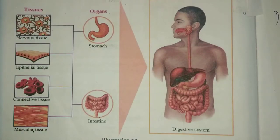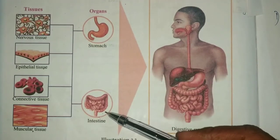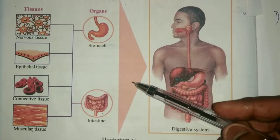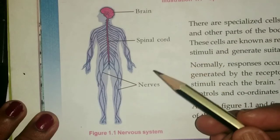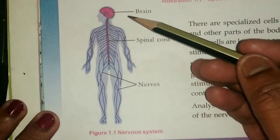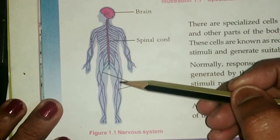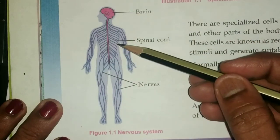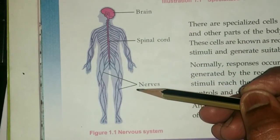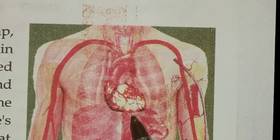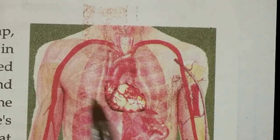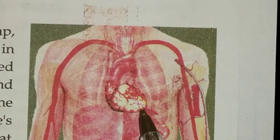What is the advantage of organs with the same function working together as a system? Here we can see two organs — stomach and intestine — working as a system. Another organ system is the nervous system, which consists of brain, spinal cord, and nerves. This is the circulatory system, which consists of heart and blood vessels.